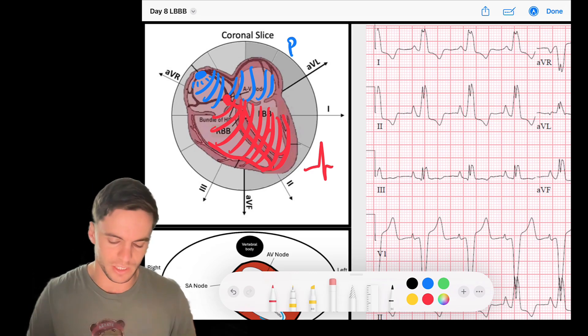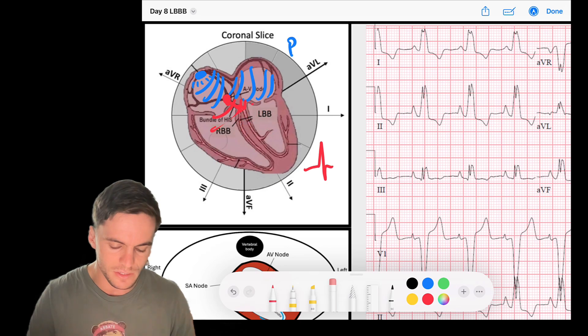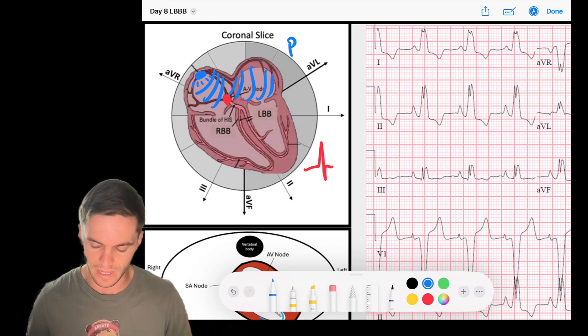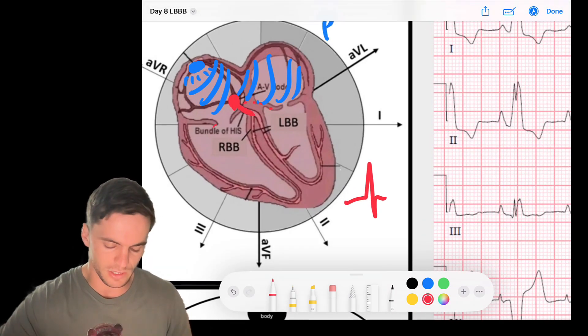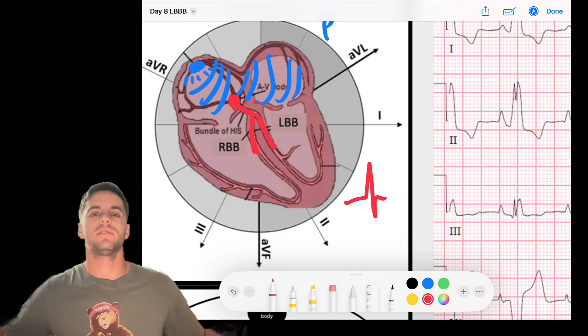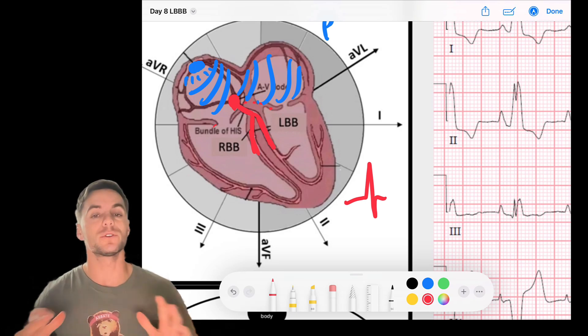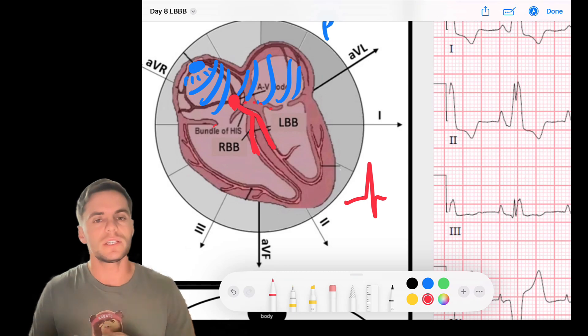Now in a bundle branch block, this is a phenomenon that occurs when there is disease within the bundle branches. Just to review a little bit of anatomy here, you have your bundle of His, and then it branches into the right bundle and it branches into the left bundle. Those bundles supply the left and right sides of the heart with the electrical fibers or signals that are coming down. So essentially, in a bundle branch block, there is a disease of one of these bundle branches.